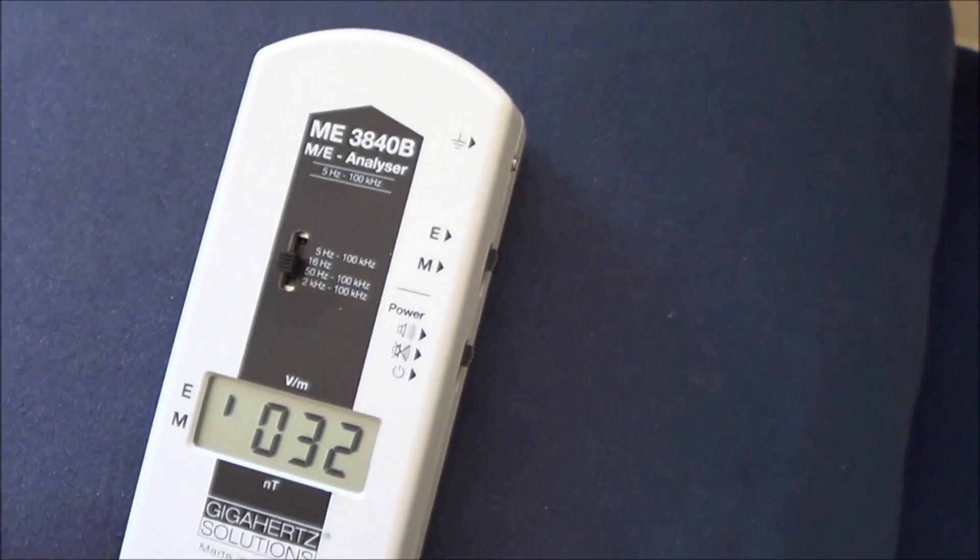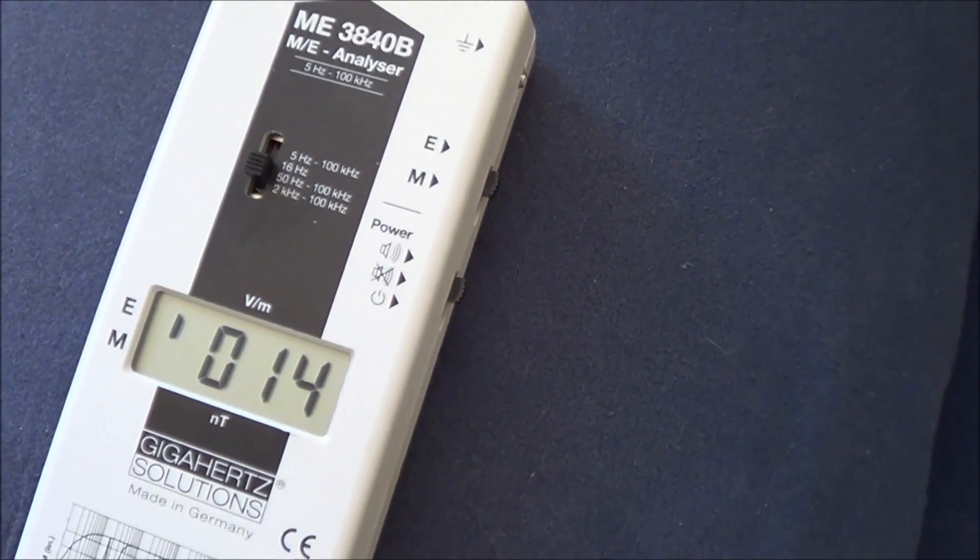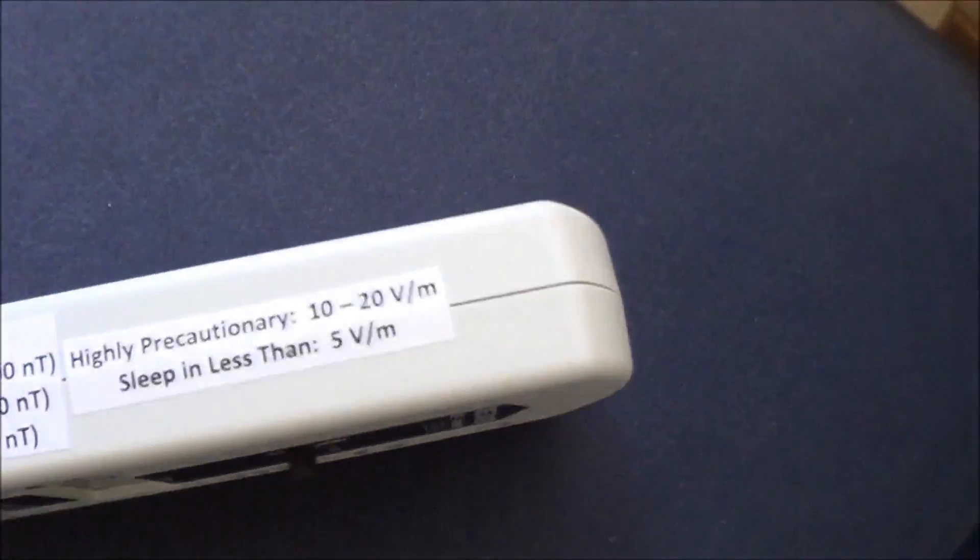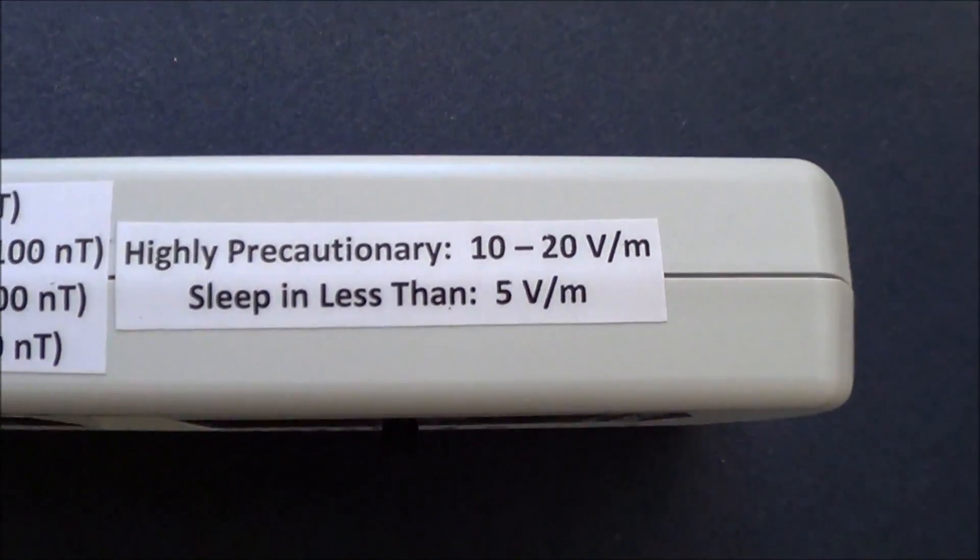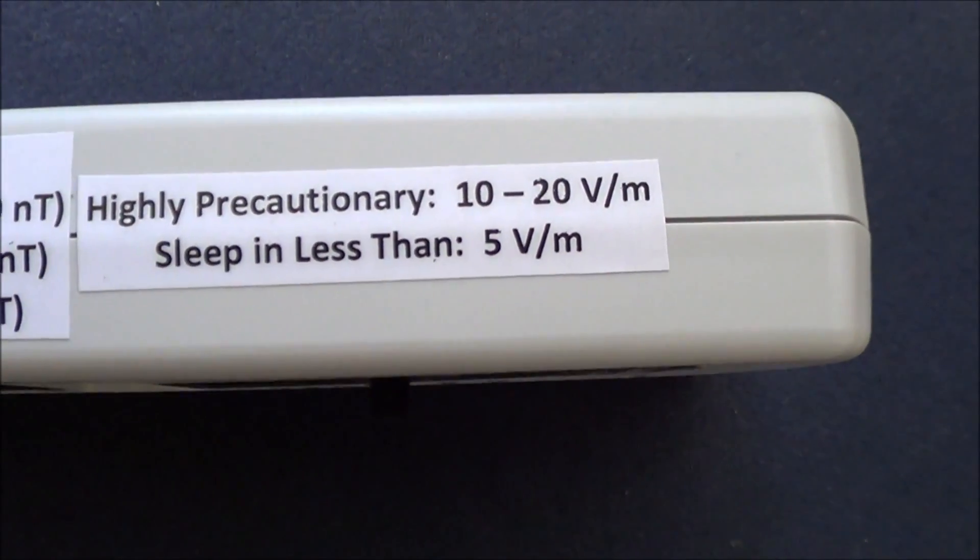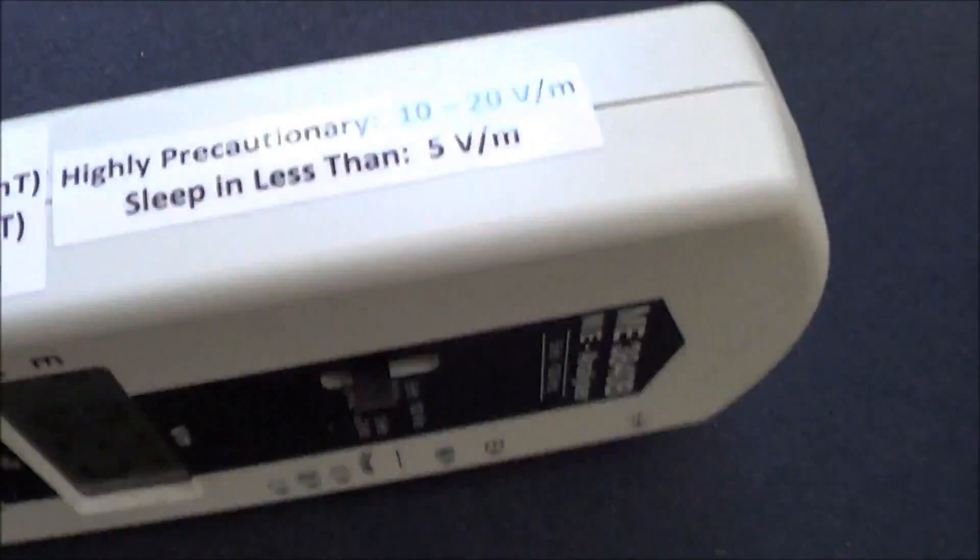And right where my head would be on this pillow, it's measuring 14 volts per meter. And here's where I keep my little notes on the meter. Notice that 10 to 20 volts per meter is highly precautionary, and we should sleep in less than 5 volts per meter.